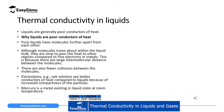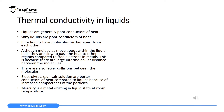When we discuss thermal conductivity in liquids, we are going to realize that generally liquids are poor conductors of heat. However, some liquids, like mercury and some electrolytes — which are solutions of salts — are going to be better conductors of heat. But generally, most liquids are poor conductors of heat.